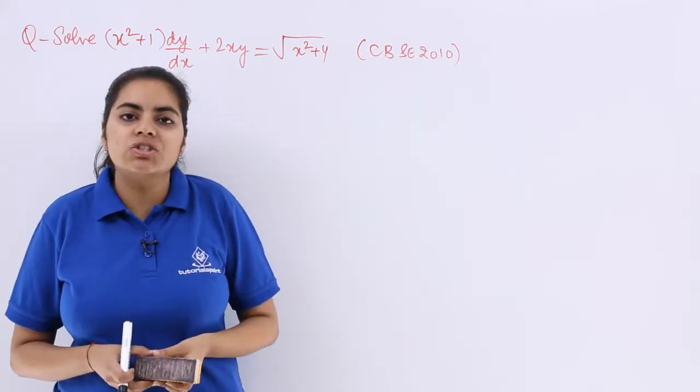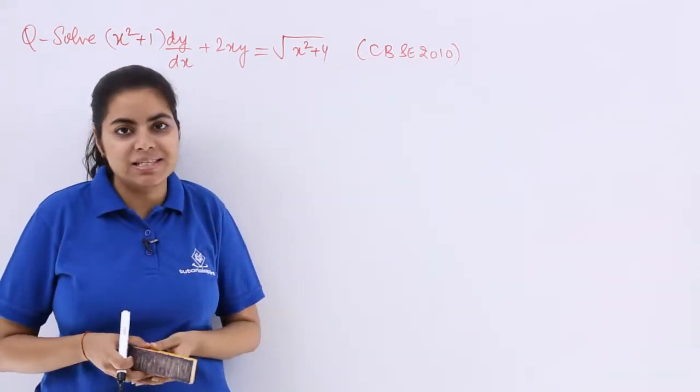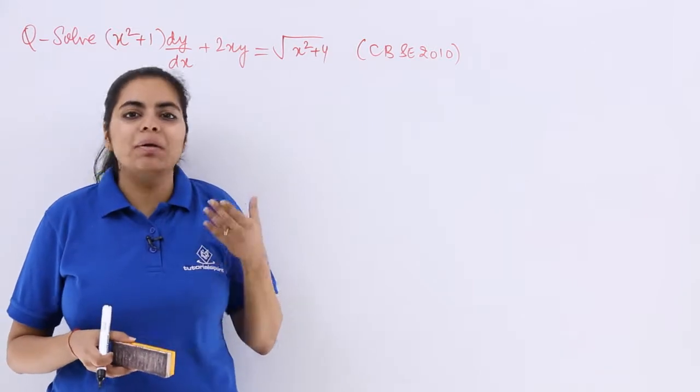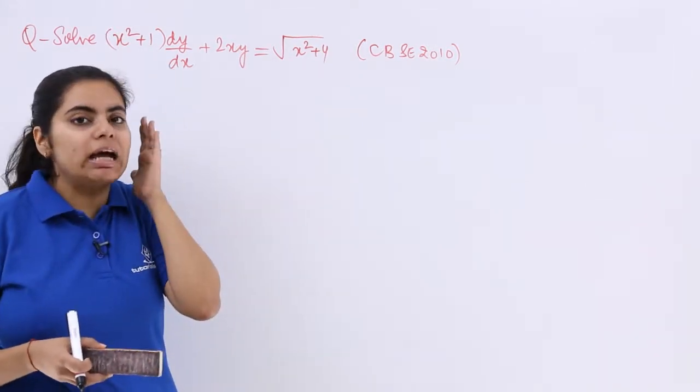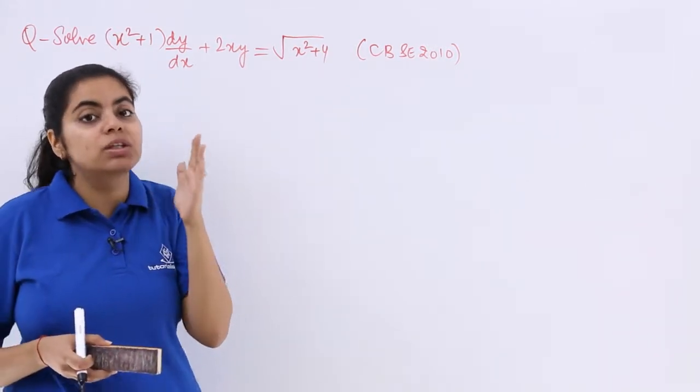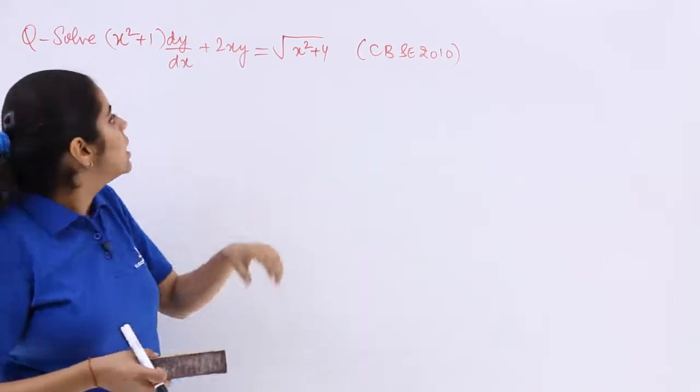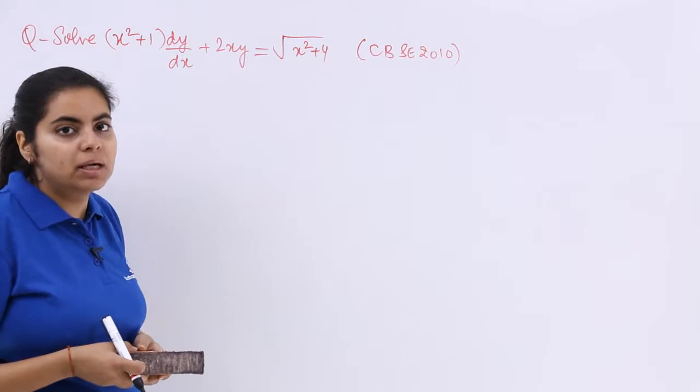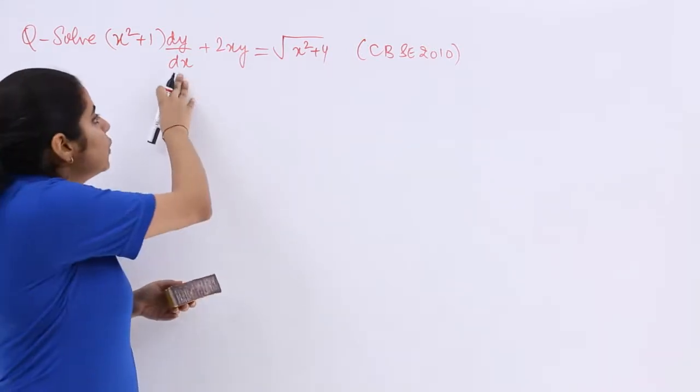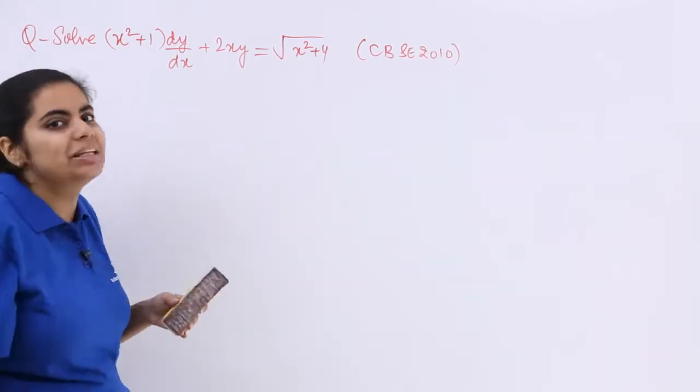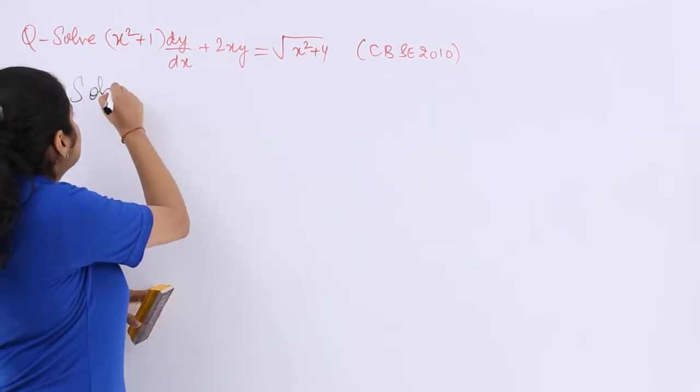Now this question, as you can see, has one important term √(x²+4), but do not panic because one thing that I am very clear with is comparison with the general form of linear differential equation. Now this has x²+1 multiplied which cannot be the case because the coefficient of dy/dx should be 1. So let me write solution and move about with it.